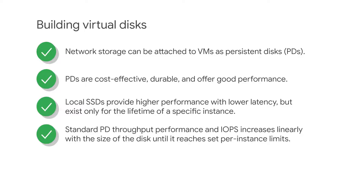Lower core VMs have lower write IOPS and throughput limits due to the network egress limitations on write throughput. SSD persistent disk performance scales linearly until it reaches either the limits of the volume or the limits of each Compute Engine instance.